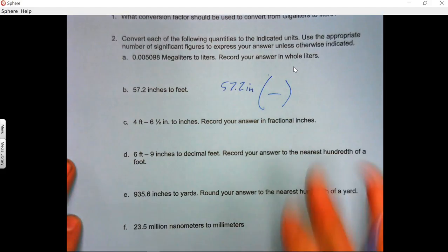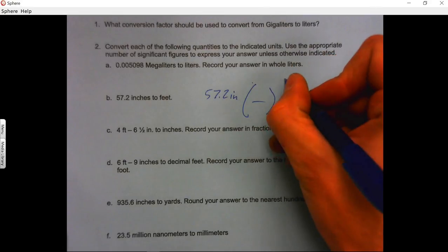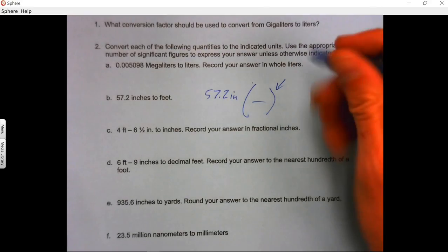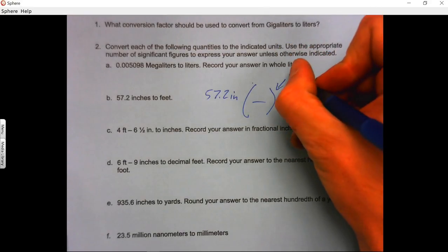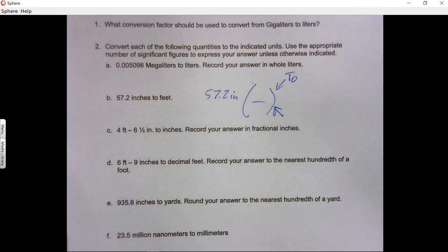Conversion ratio. So a conversion ratio is just a fraction. Whatever's on top is what we're converting to. And whatever is on the bottom is what we're converting from.